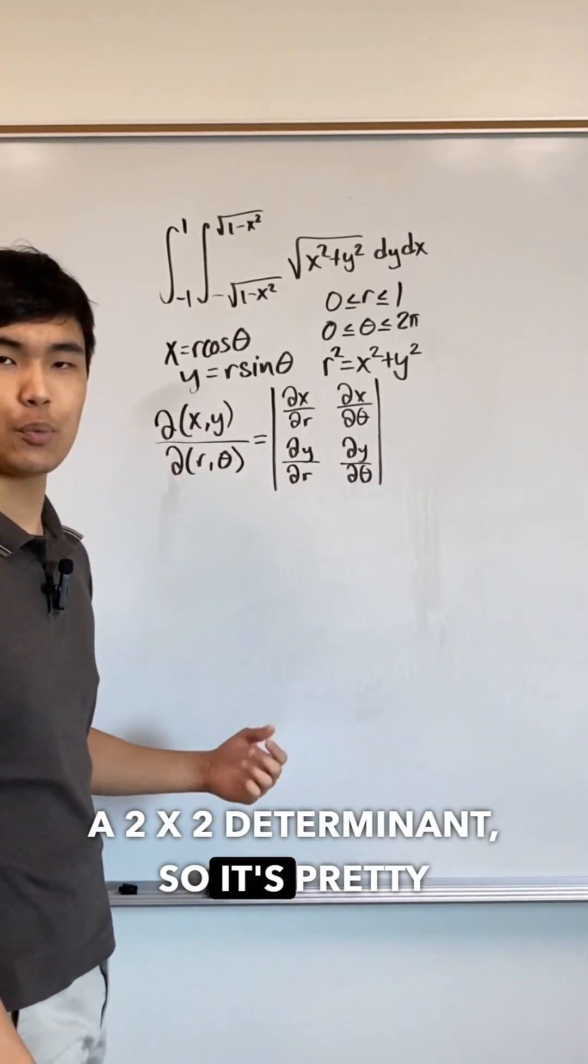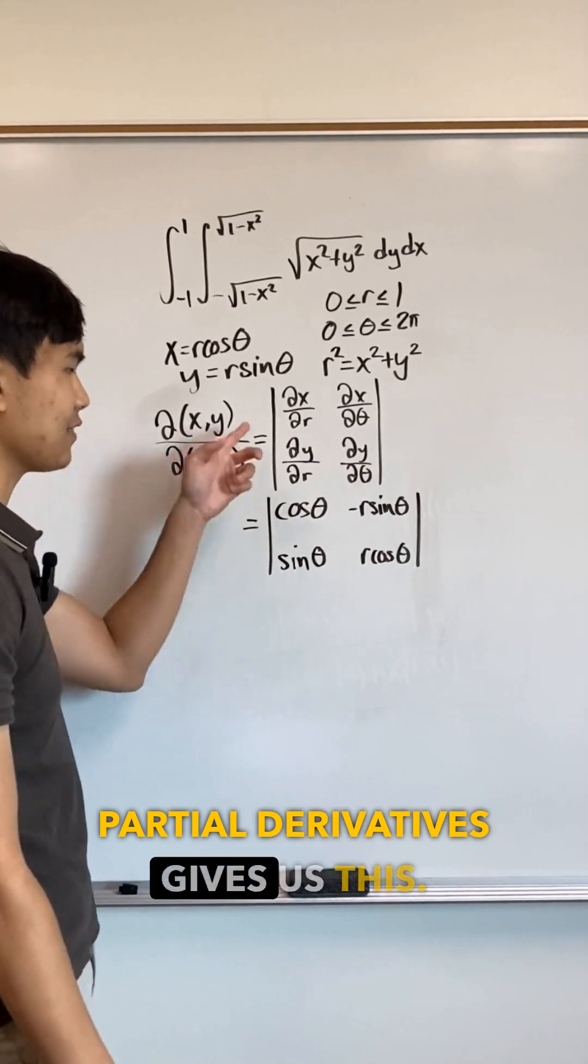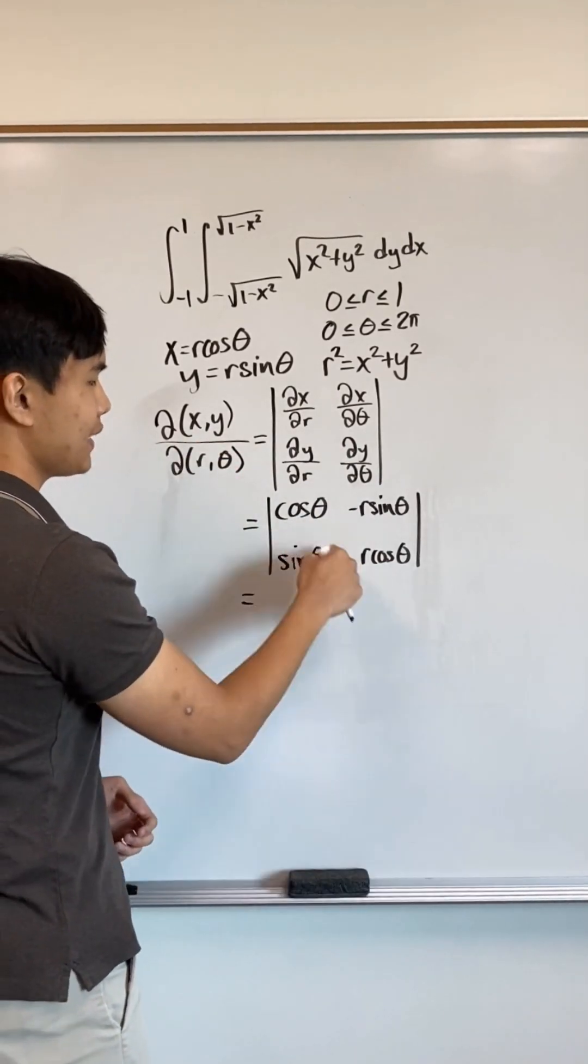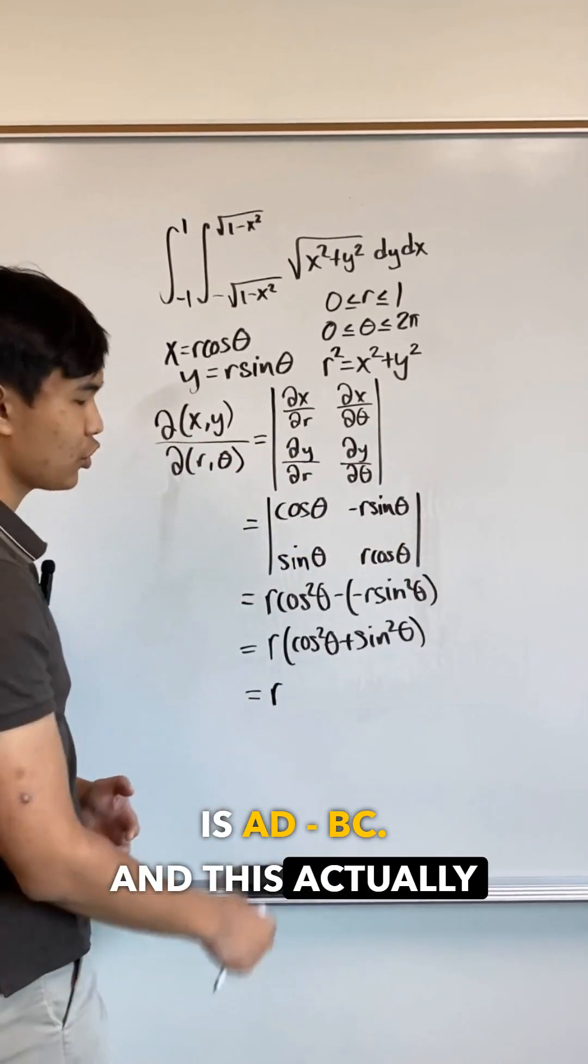Luckily right now it's a 2 by 2 determinant, so it's pretty easy. Evaluating the partial derivatives gives us this. And remember a 2 by 2 determinant is ad minus bc. This actually just simplifies to r.